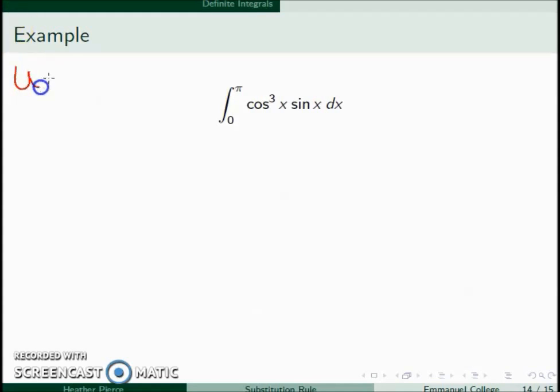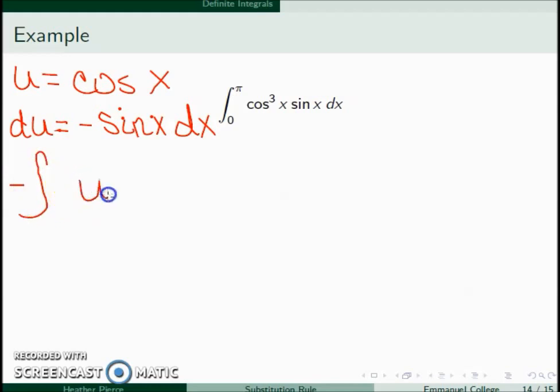We did one similar to this before. For this one we have u equal to cosine x, which would make du equal to negative sine x dx. To balance out the negative in this derivative we will make this integral negative u cubed du. When x is 0, cosine of 0 is 1, and when x is pi, the cosine of pi is negative 1.